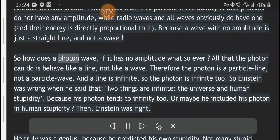So how does a photon wave, if it has no amplitude whatsoever? All that the photon can do is behave like a line, not like a wave. Therefore the photon is a particle line, not a particle wave.